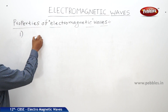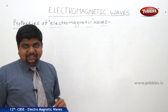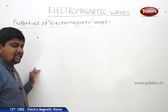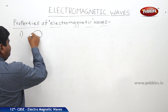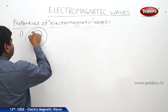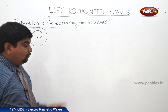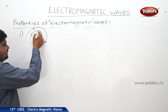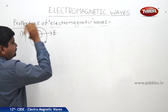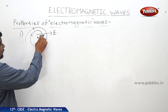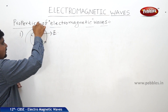Let us take a charged particle which is making revolutions around a nucleus with some frequency. The frequency of the charged particle is its natural frequency. We know that within the space, if the charge is accelerating, an electric field will be produced within the space, and a magnetic field is produced within the circumference.